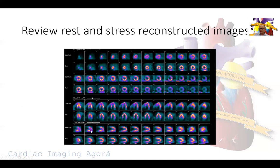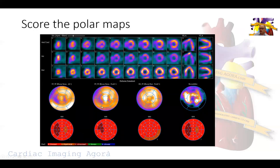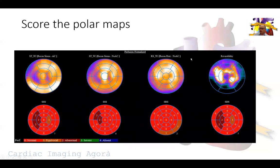When we try to score this it's a complete mess. The rest images are normal, the stress images show perfusion defects with intense uptake in the apex and a septal perfusion defect. When we apply attenuation correction we correct some basal defects but end up with a worse perfusion defect in the septum. The reversibility map shows a large area of reversibility with a weird shape of the heart.